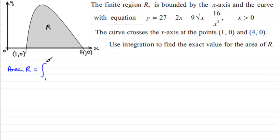If we prepare this for integration, because these two terms here need to be modified, what we've got then is to integrate 27 minus 2x minus 9 times the root of x, and that's going to be x to the power half.